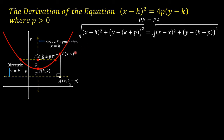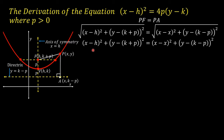Using the distance formula: the square root of (x − h)² + (y − (k + p))² is equal to the square root of (x − x)² + (y − (k − p))². Squaring both sides, we have (x − h)² + (y − (k + p))² = (x − x)² + (y − (k − p))².